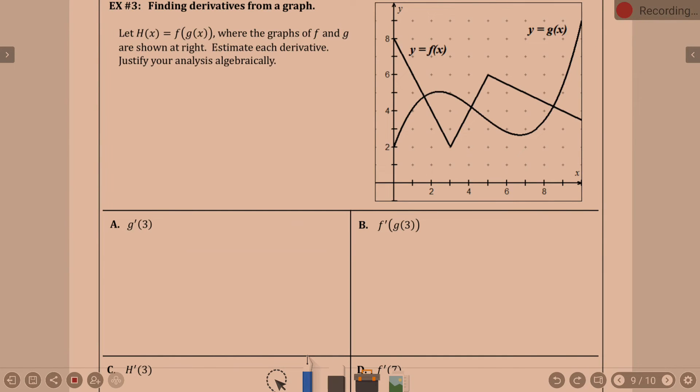This next page is a good page to go over because we haven't done as much with a graph and derivatives lately. We did at the very beginning, back in the beginning of unit two, but it's been a moment. So, let H of X equal F of G of X, where the graphs of F and G are shown at right. Estimate each derivative. Justify your analysis algebraically. So, G prime of three. Do I need to draw it on? Can I draw it on? Why don't we be negative two? No. Problem solved. I'm not looking at the best spot.